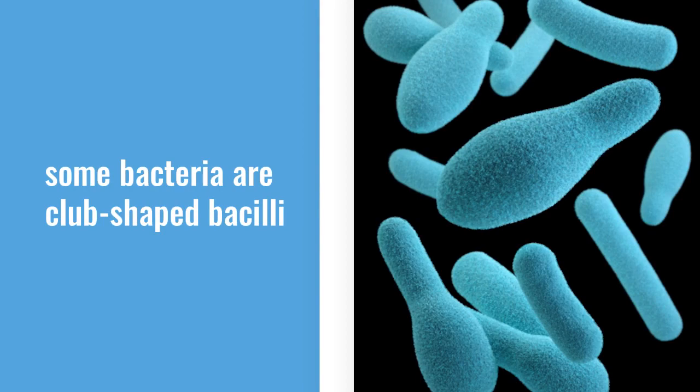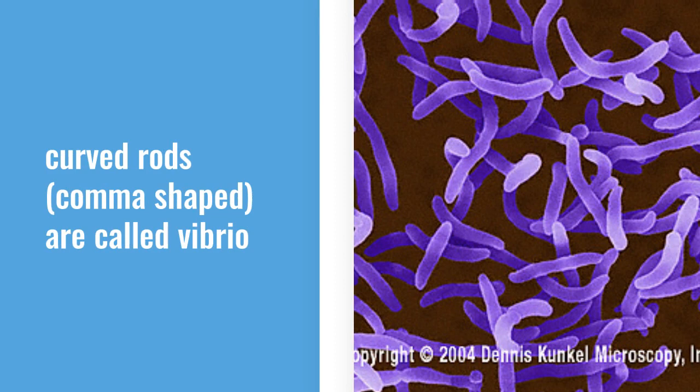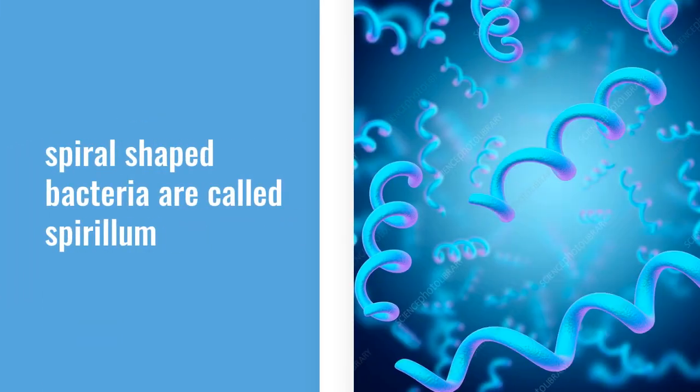Sometimes the bacteria are club-shaped bacilli. Some rods will have a comma shape, so a curved shape, and they're called vibrio, like Vibrio cholerae. If the bacteria is spiral-shaped, they're called spirillum, and there's also some spirochetes that have a similar shape.